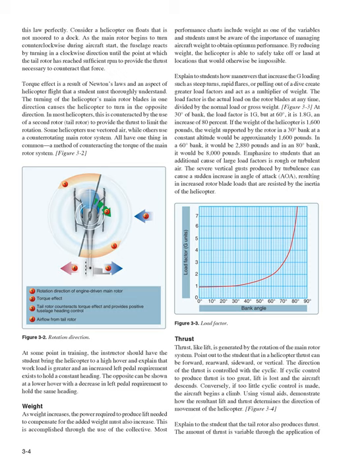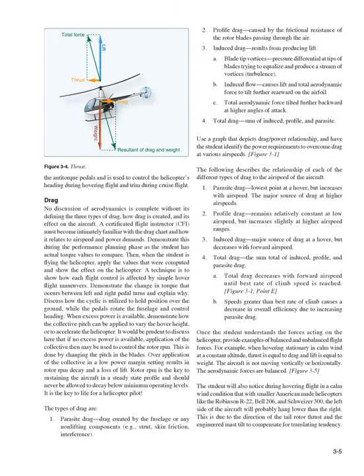Thrust: like lift, is generated by the rotation of the main rotor system. In a helicopter, thrust can be forward, rearward, sideward, or vertical — the direction of thrust is controlled with the cyclic. If cyclic control to produce thrust is too great, lift is lost and the aircraft descends; if too little cyclic control is made, the aircraft begins a climb. Demonstrate how the resultant lift and thrust determines the direction of movement of the helicopter. The tail rotor also produces thrust — variable through application of the anti-torque pedals — and is used to control the helicopter's heading during hovering flight and trim during cruise flight.